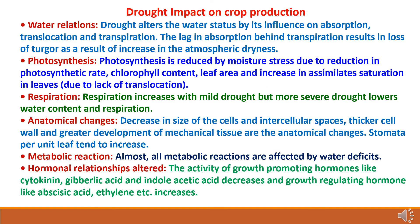Drought impact on crop production. First, effect on water relations: drought alters water status by its influence on absorption, translocation, and transpiration. The lag in absorption behind transpiration results in loss of turgor as a result of increase in atmospheric dryness. Second, effect on photosynthesis: photosynthesis is reduced by moisture stress due to reduction in photosynthetic rate, chlorophyll content, and leaf area, and an increase in assimilate saturation in leaves due to lack of translocation.